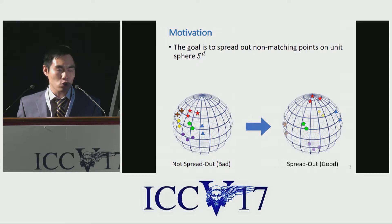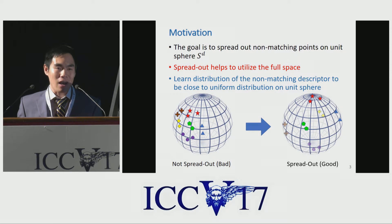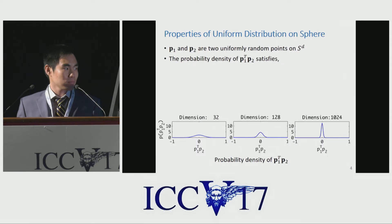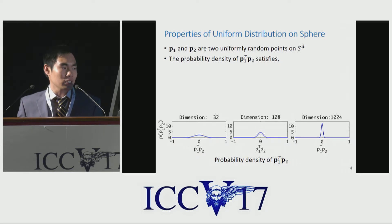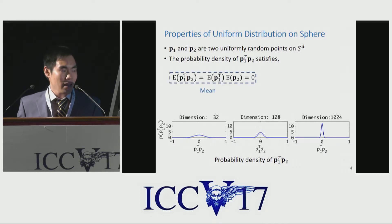Spreading out helps us solve that problem. Because the uniform distribution has a nice spread-out property, we try to learn the distribution of the non-matching descriptors to be close to the uniform distribution on the unit sphere. We first examine the properties of the uniform distribution on the sphere. Let P1 and P2 be two uniformly sampled points from the unit sphere. The probability of their inner product should satisfy zero mean and 1/D second-order moment.